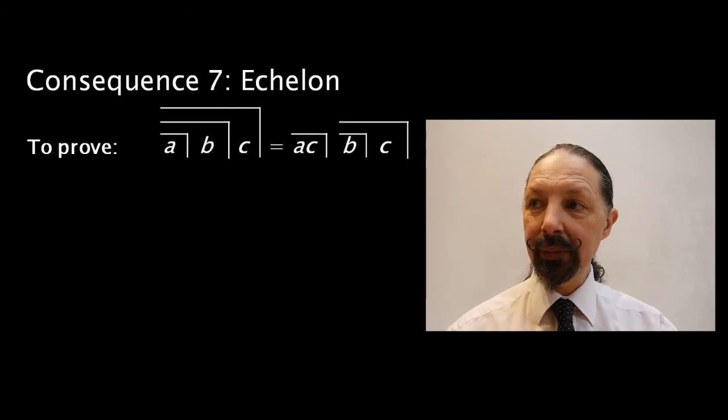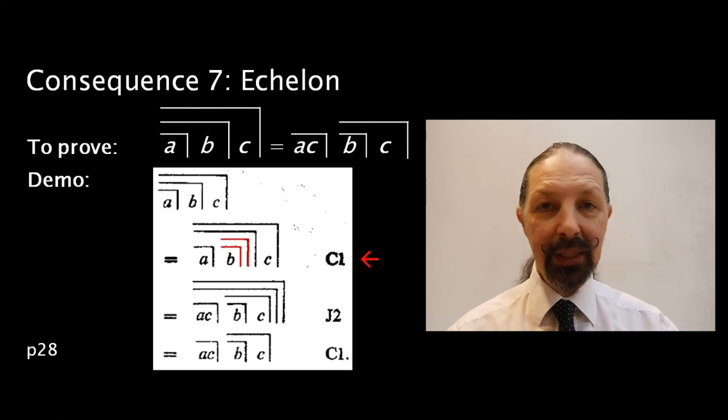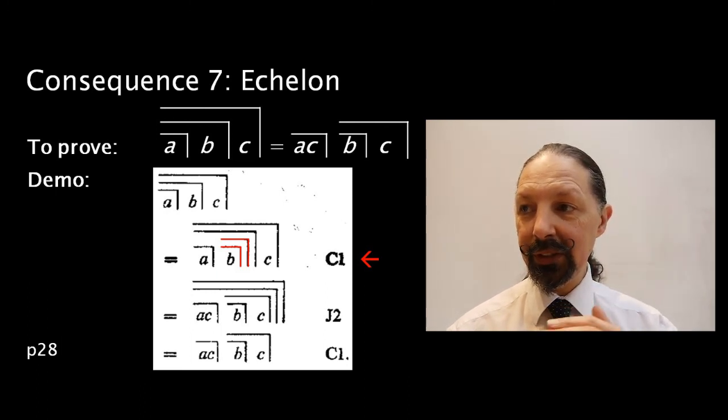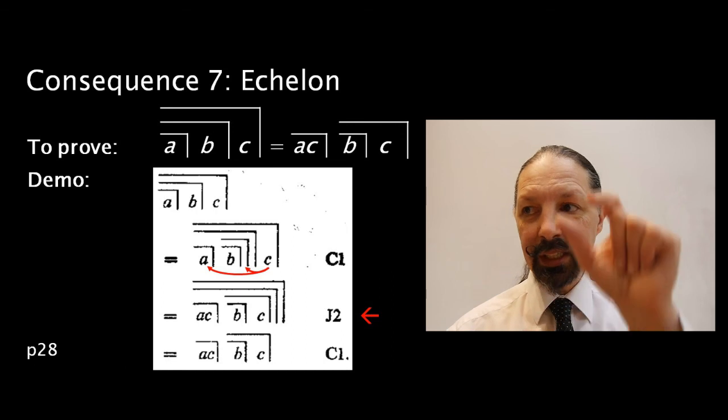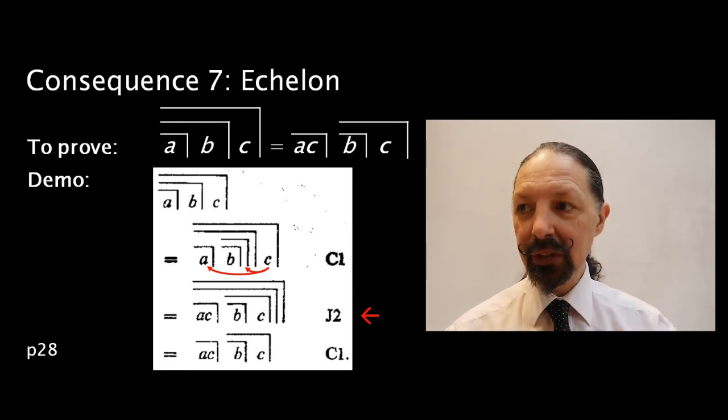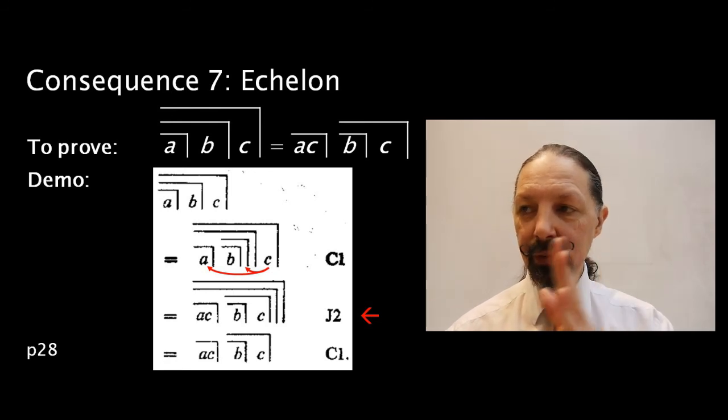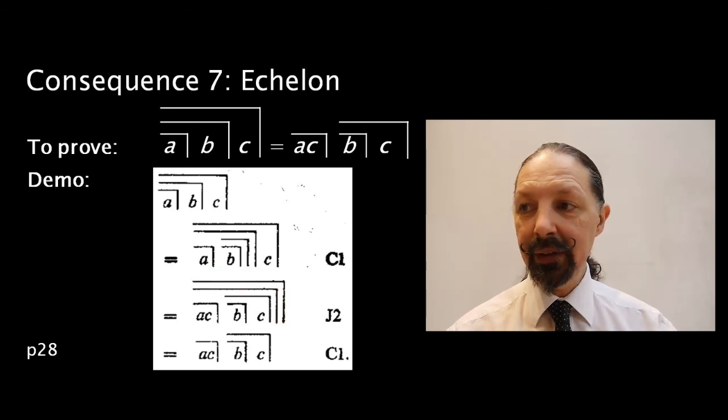Consequence seven is called echelon. The proof is this. We take C1 and put it on the B term. That, again, gives us two divisions of the deeper space, the middle space, if you like. We use J2. We move the C term in inside each of those divisions. So, you've got to be careful where you put the C term when you've got several divisions of a space. So, here it goes next to the A and next to the B mark. And then, you remove the nested marks, and you have the end expression.